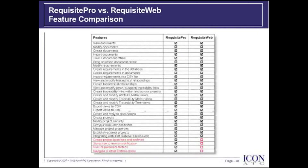On this slide, I provided a feature comparison of Requisite Pro and Requisite Web. Note that at the bottom of the slide, highlighted in red, are the differences in functionality between the two. In short, Requisite Web may be used to provide the typical end user with the majority of the functionality without the need to deploy the product on the client's machine.